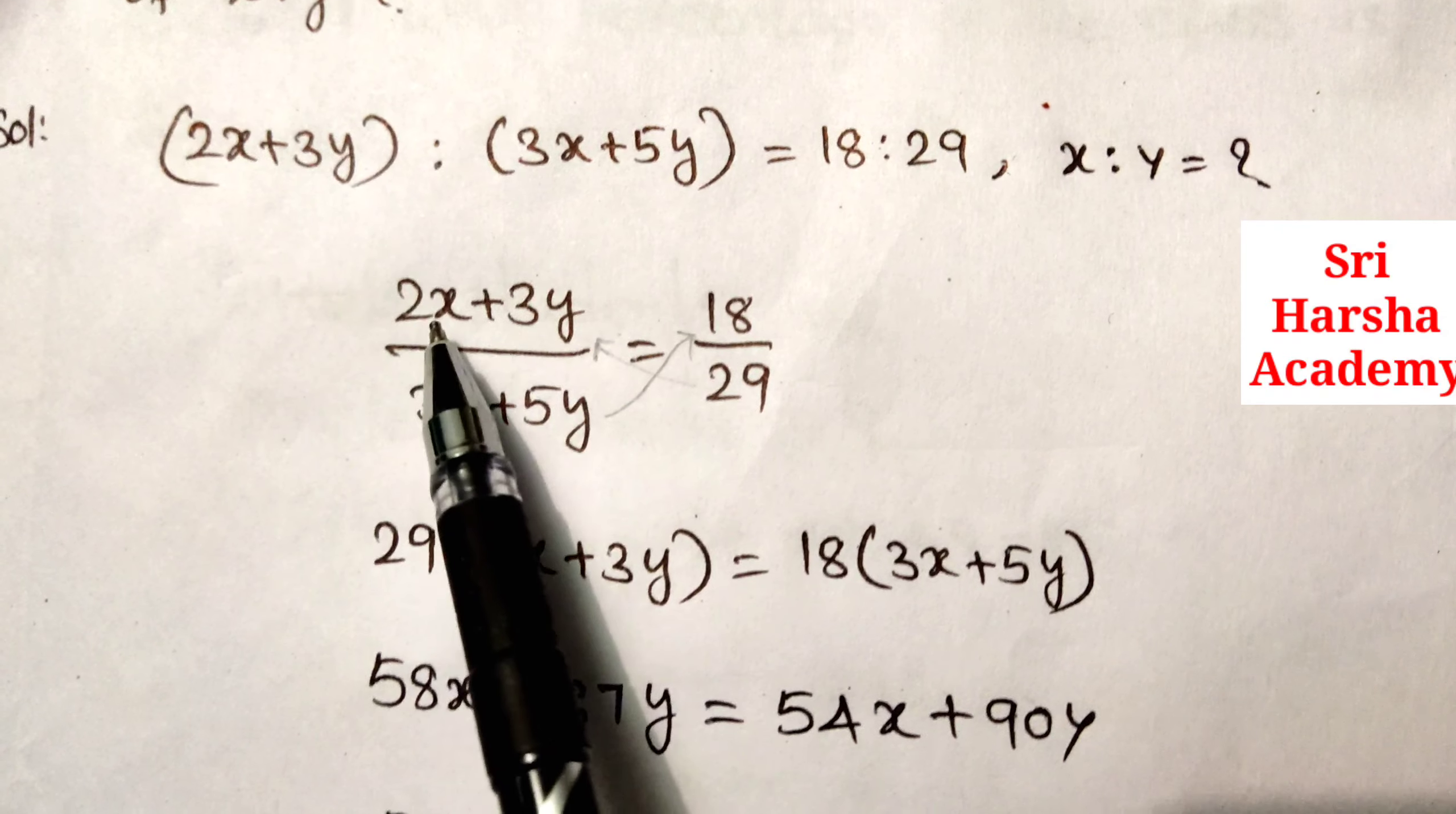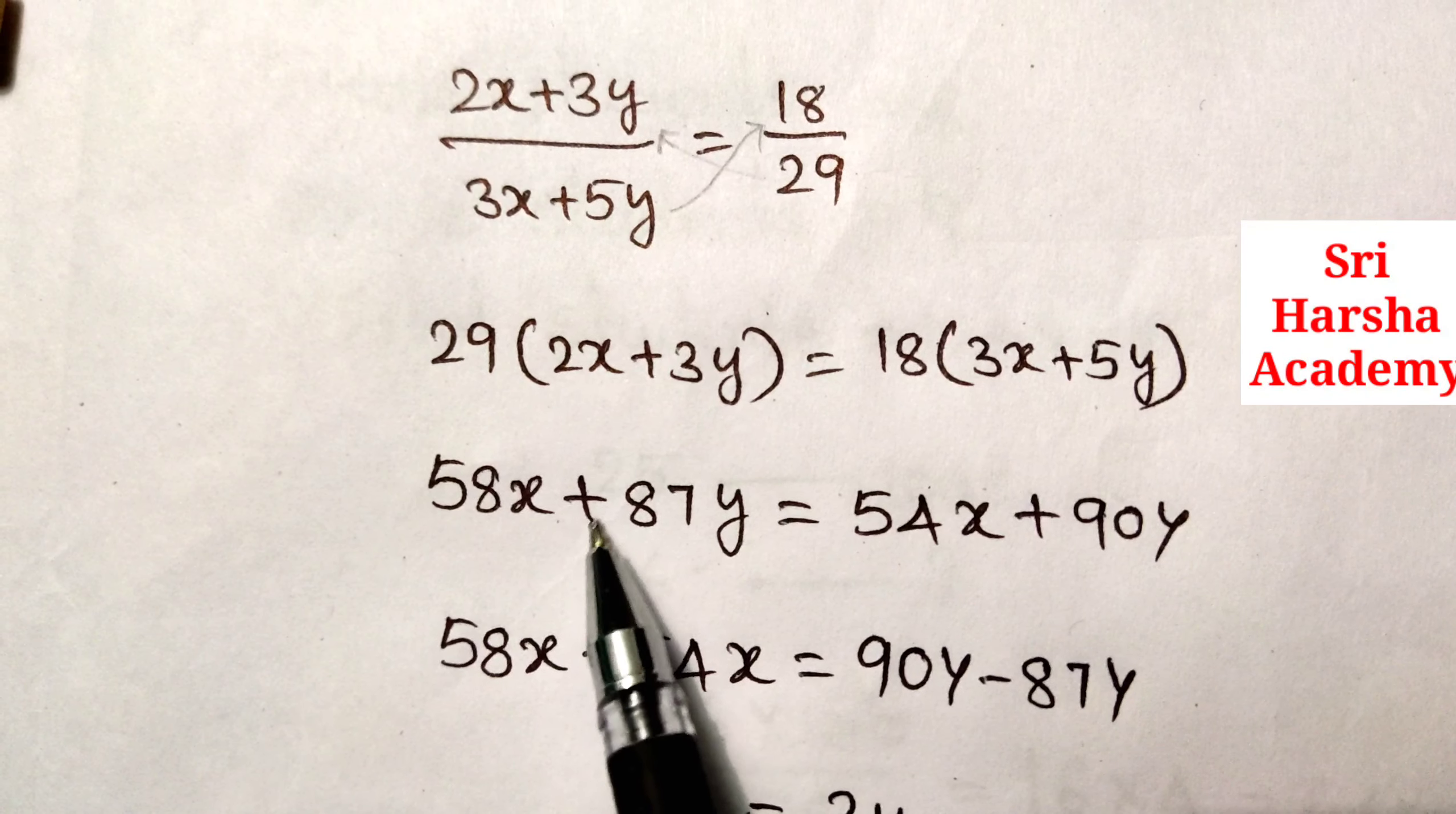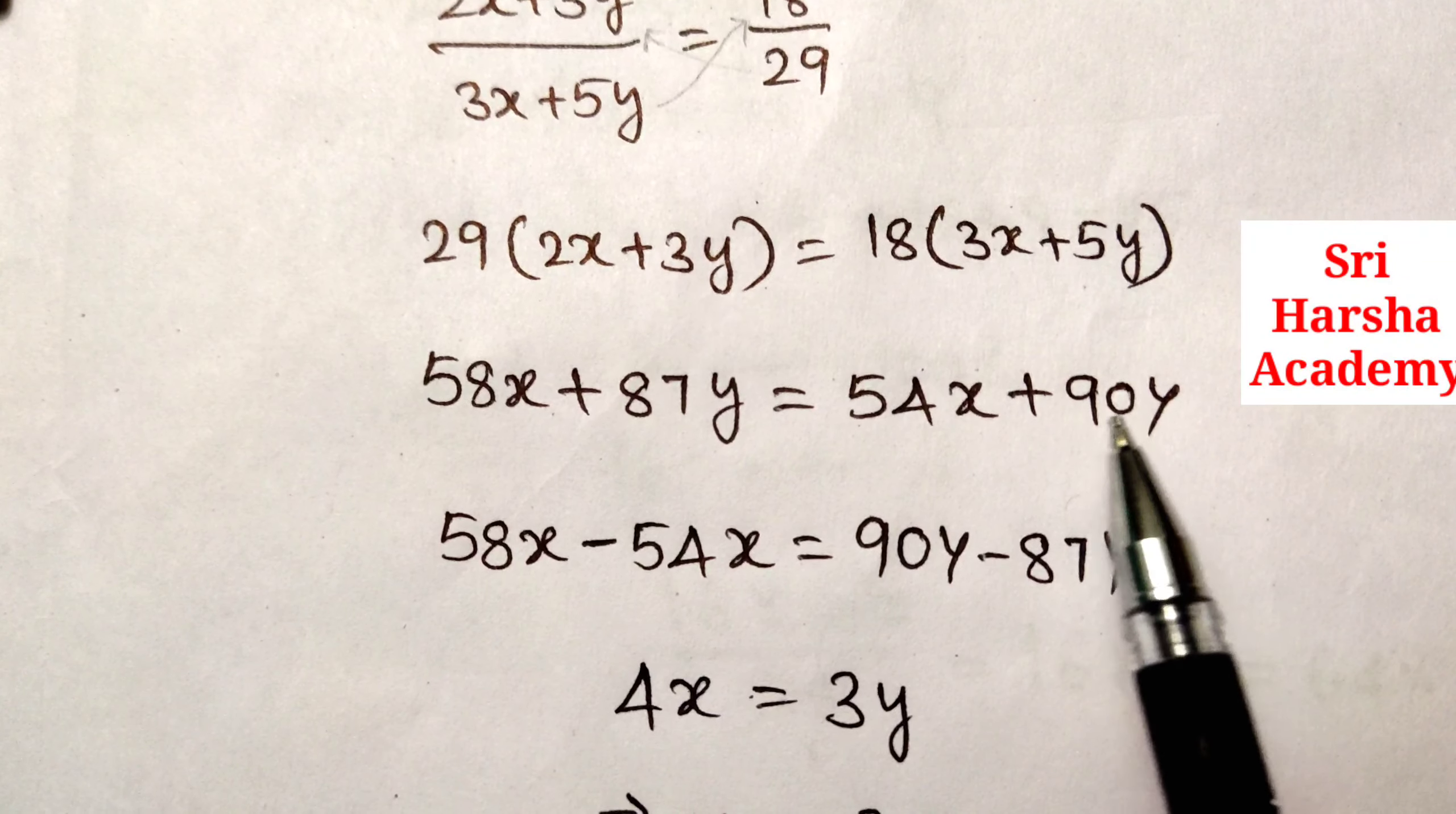then 29 into 2x plus 3y is equal to 18 into 3x plus 5y. 29 into 2x, then 58x plus 29 into 3y, 87y is equal to 18 into 3x, 54x plus 18 into 5y, 90y.